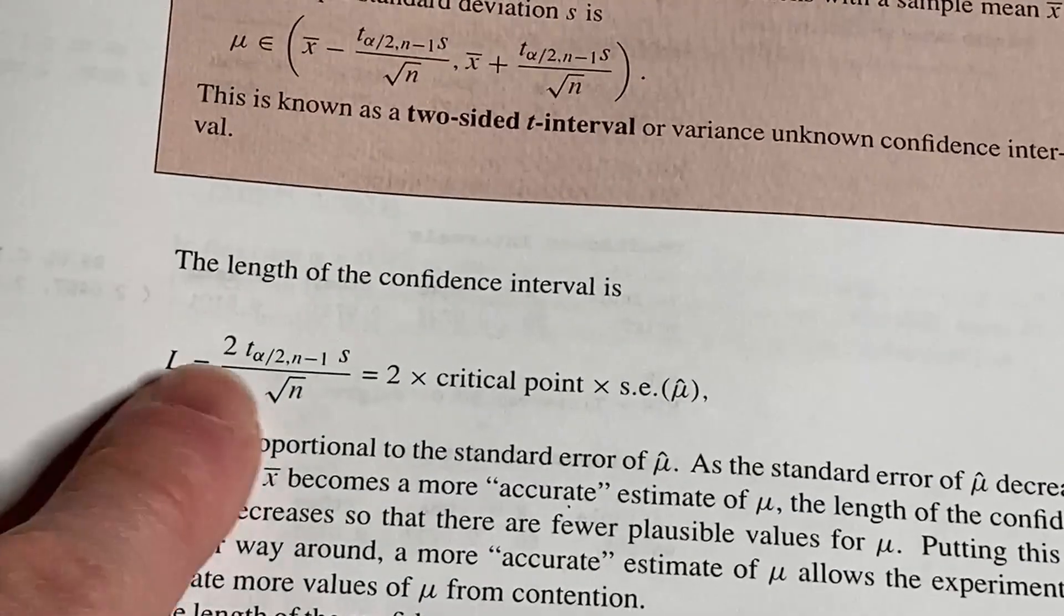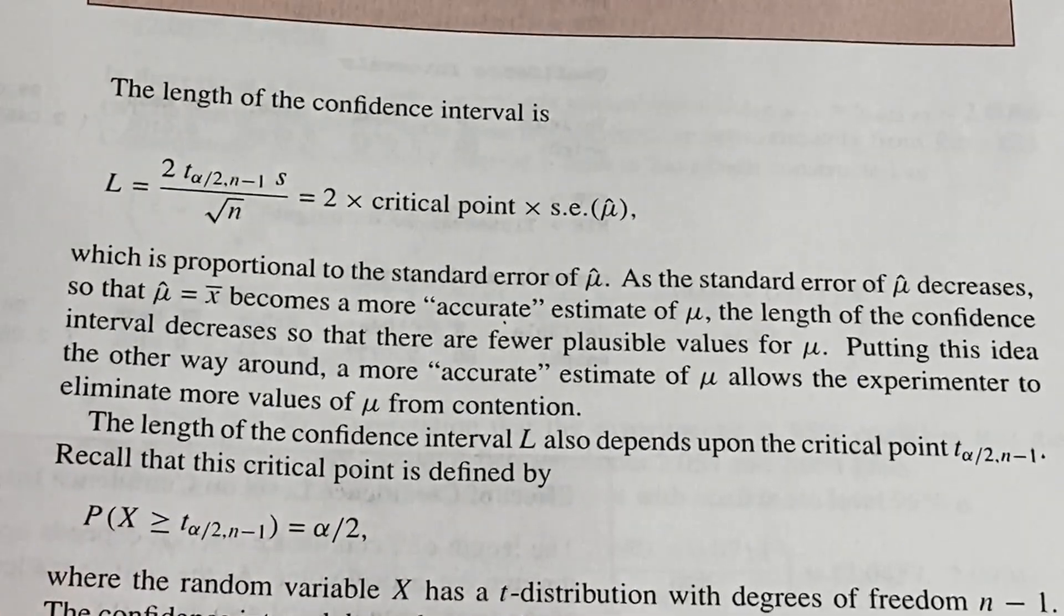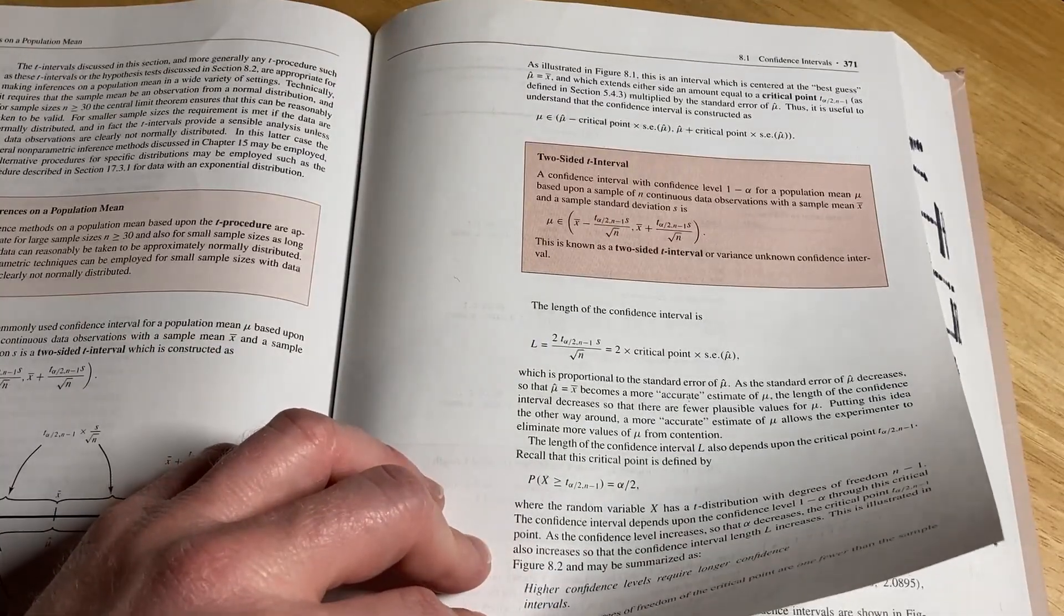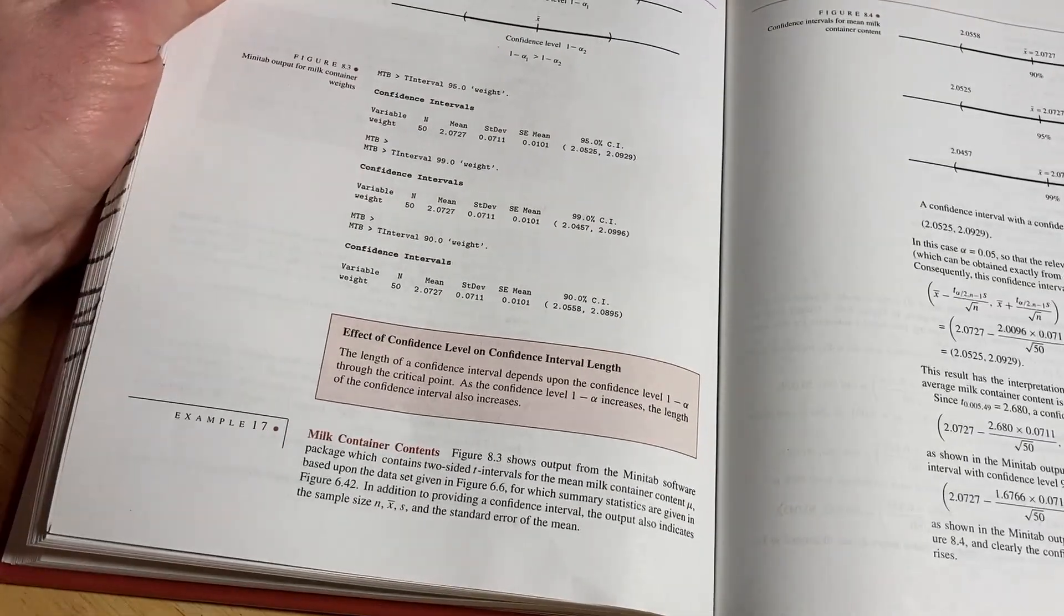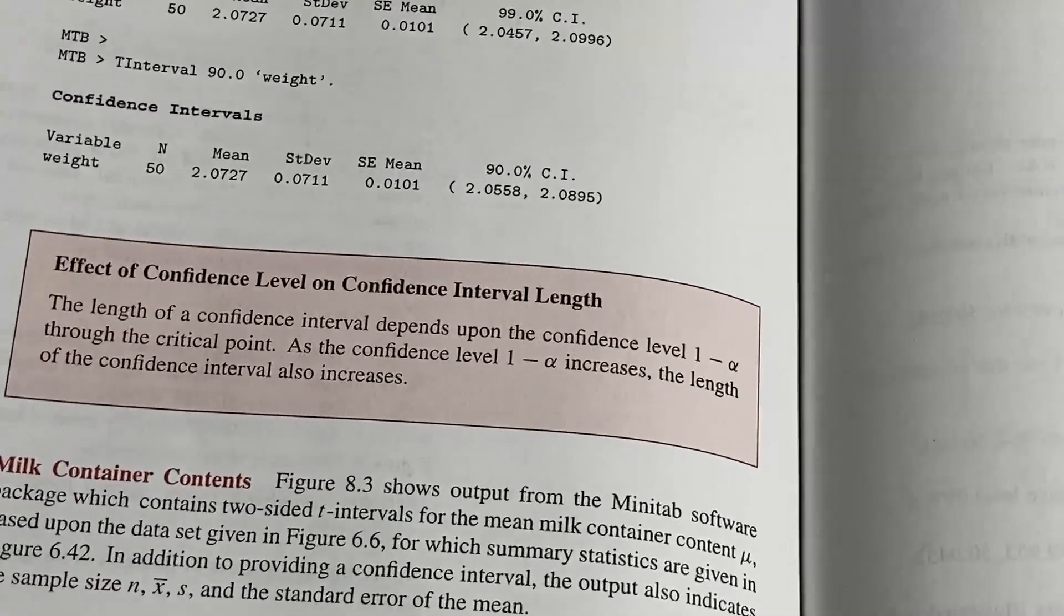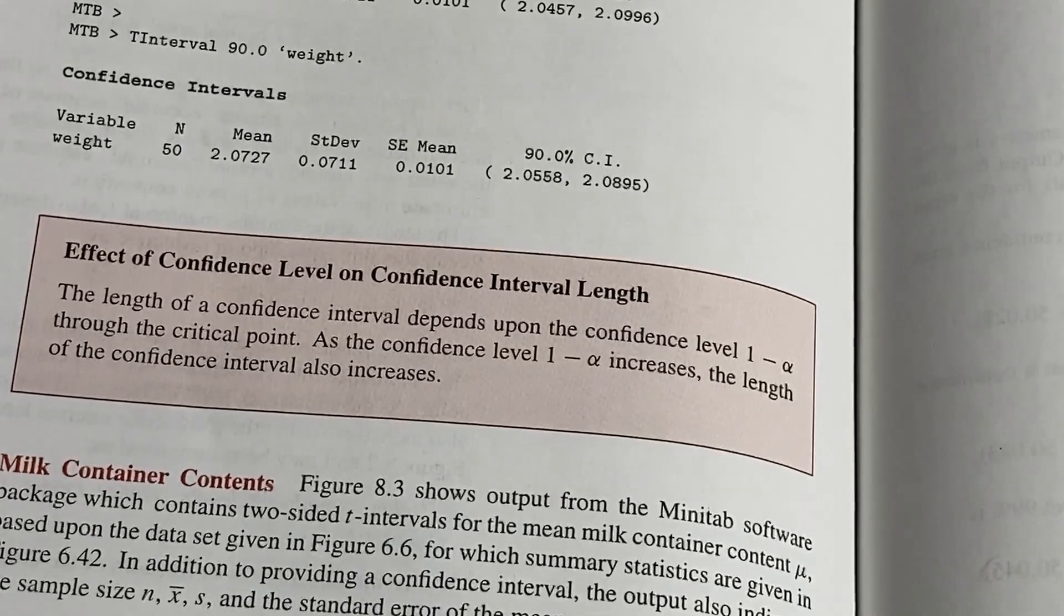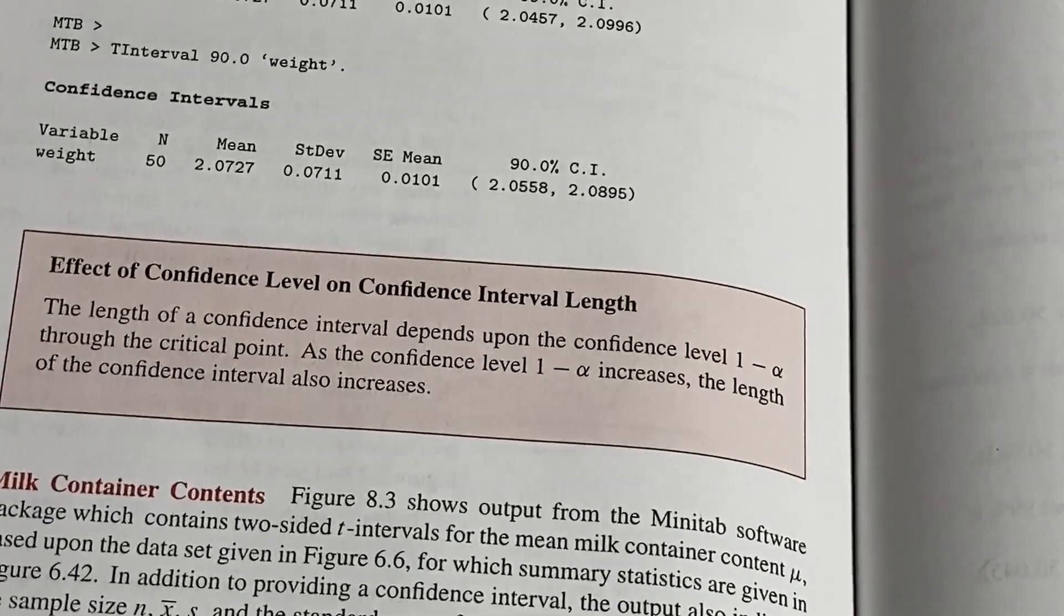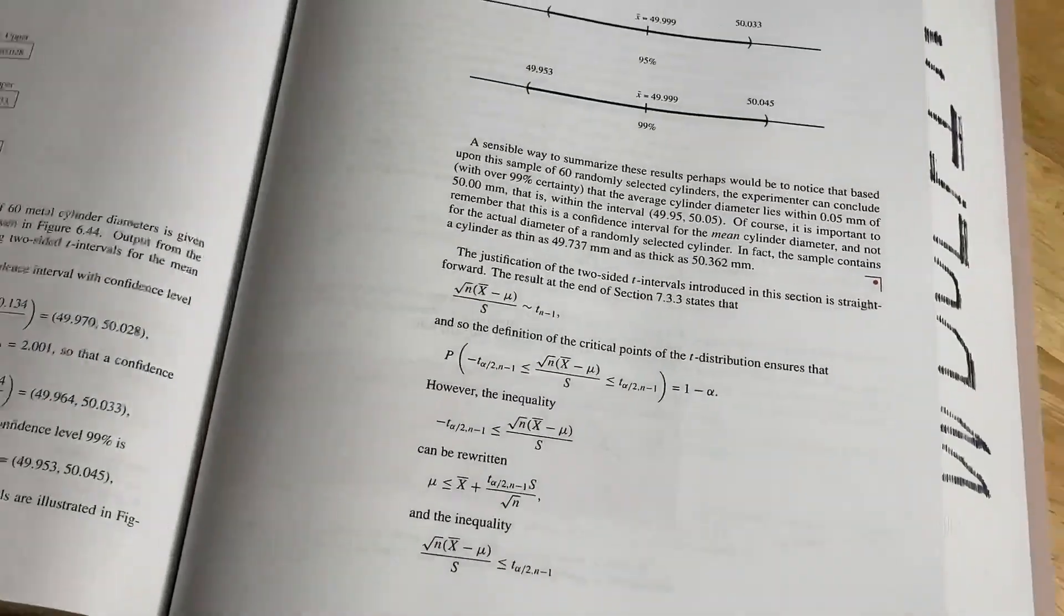They give you the length of the confidence interval. This is really cool stuff. You can use this in the real world - you can use statistics, which is kind of cool. It's one of the nice things about stats. The length of a confidence interval depends upon the confidence level 1 minus alpha through the critical point. As the confidence level increases, the length of the confidence interval also increases.